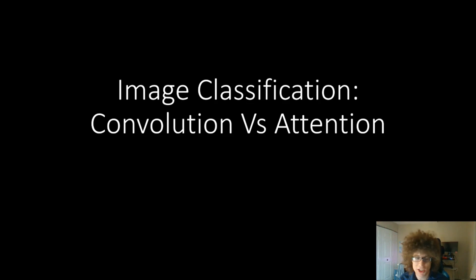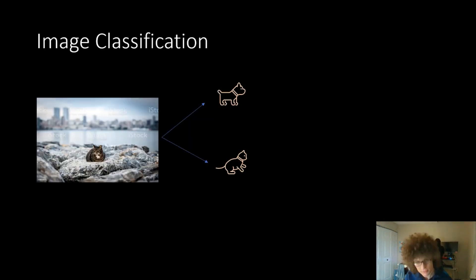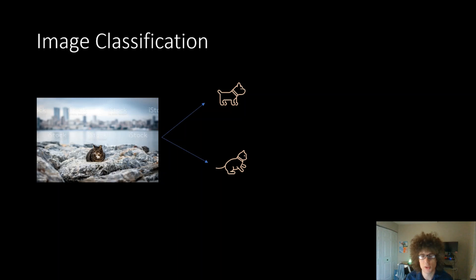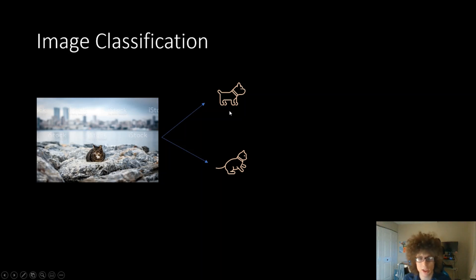Hey everyone, today we're going to be talking about image classification — whether you should be using convolutional or attention models. Image classification is one of the most popular first models to learn, and it's in pretty much every higher-level deep learning class. It's a lot of people's first network, and for good reason: it's really practical and easy to understand. Basically, you have some image you want to classify as either a dog, cat, or some number of classes.